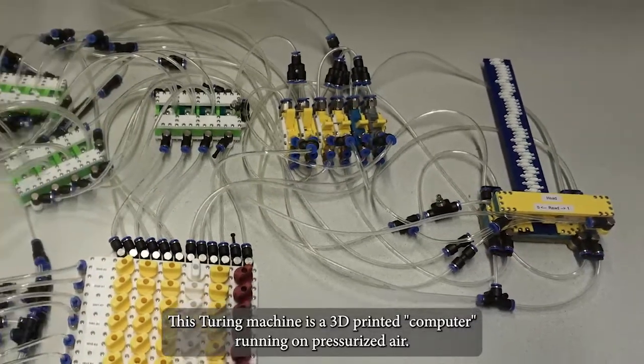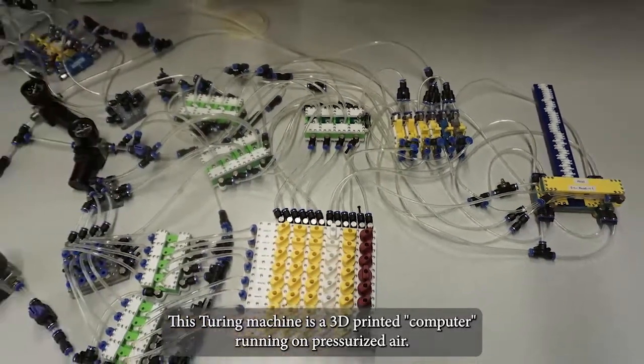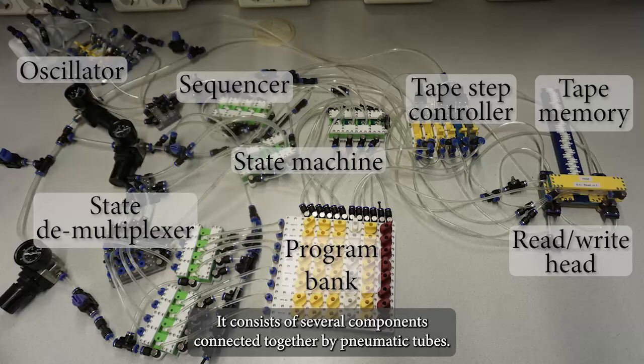This Turing machine is a 3D printed computer running on pressurized air. It consists of several components connected together by pneumatic tubes.